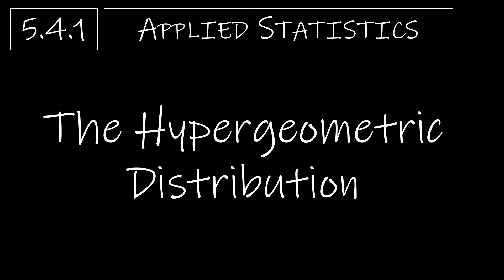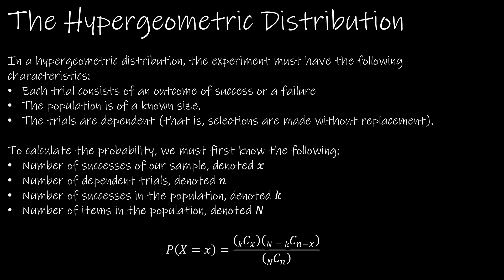In this video, we're going to take a look at the hypergeometric distribution. This is the last distribution we're going to talk about in this chapter, and it is quite often confused for the binomial distribution because of this first bullet point: each trial consists of an outcome of success or failure, just like the binomial. However, the differences are that we have a known size of the population and the trials are dependent.